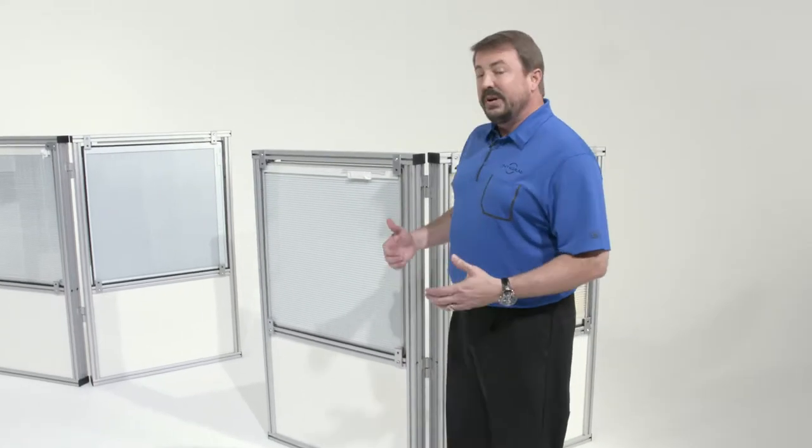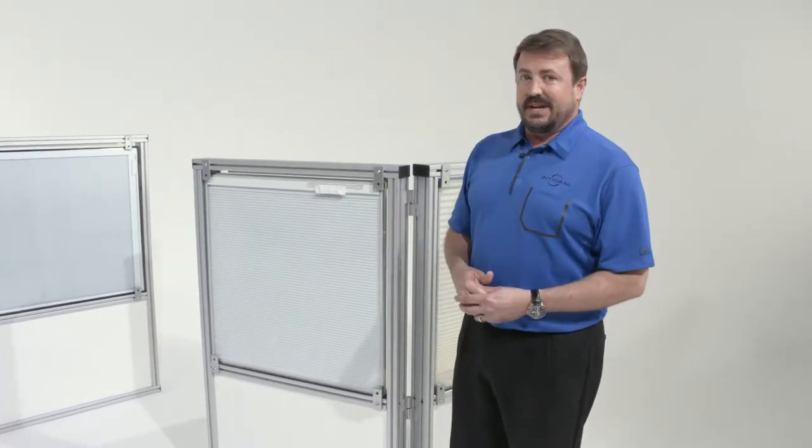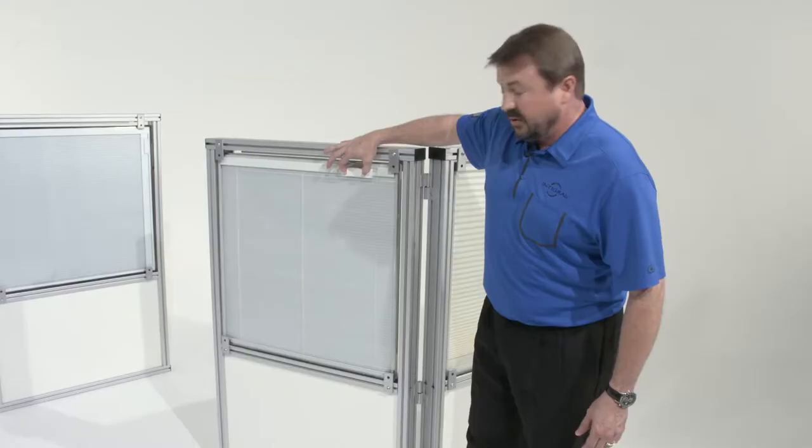The second blind I'll show you is pretty traditional. This style of blind is a tilt-only Venetian style blind. You can tilt so you can see out, or you can go all the way over so you can have privacy.